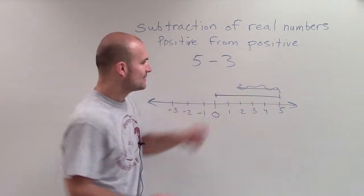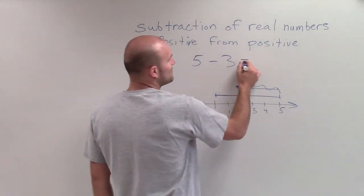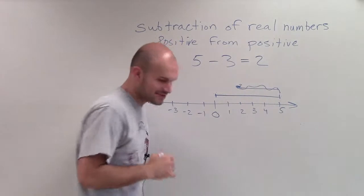Now, by going back 3 units, you can see I've ended up on 2. So 5 minus 3 equals 2.